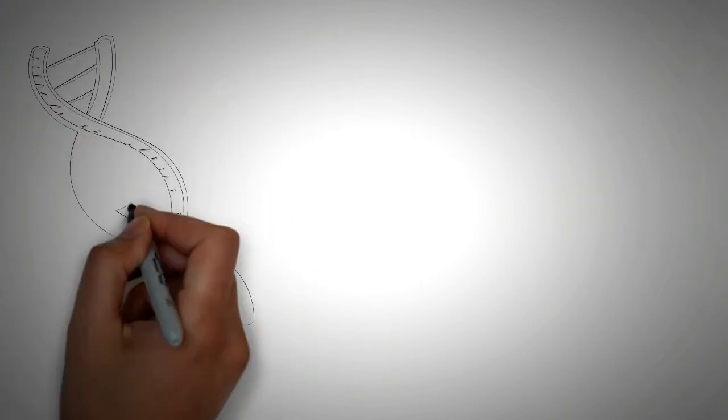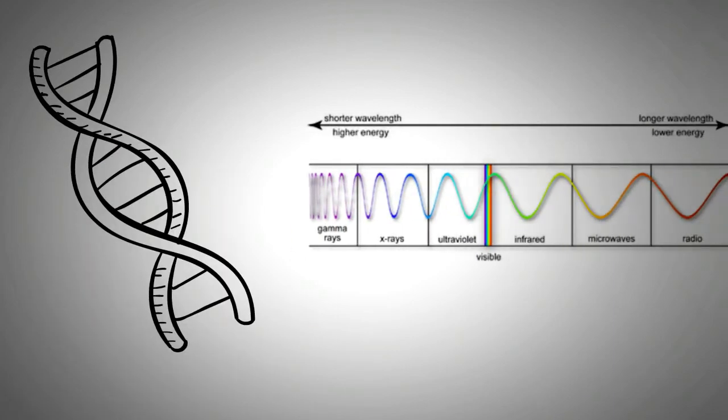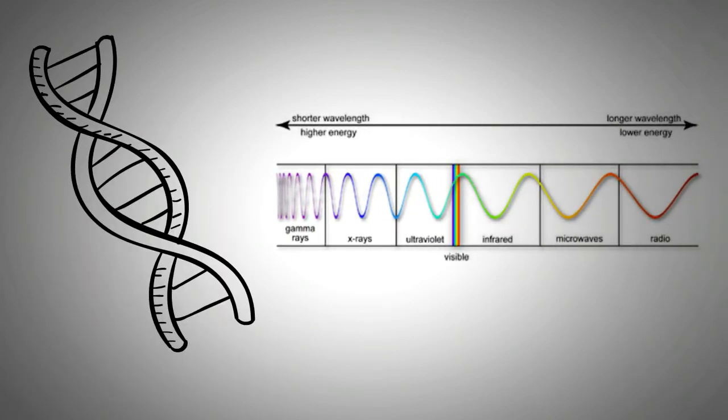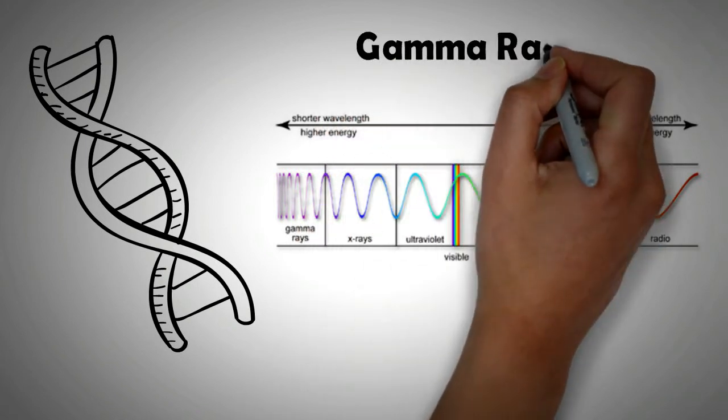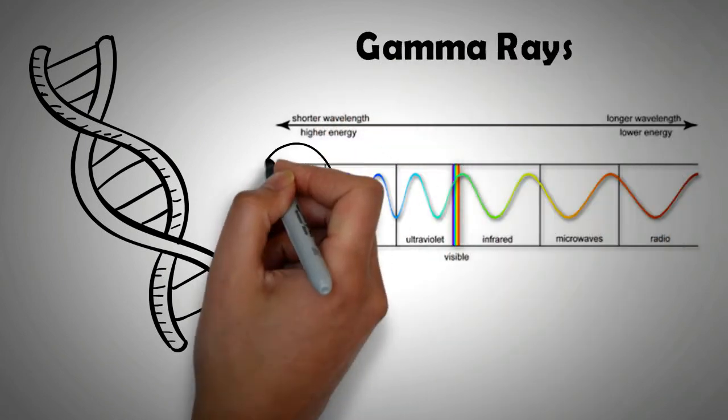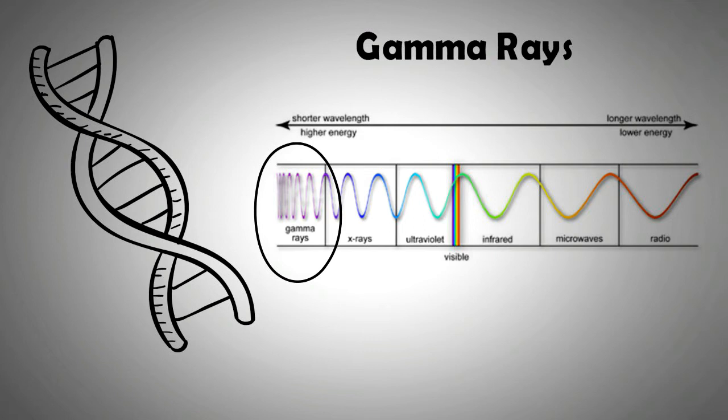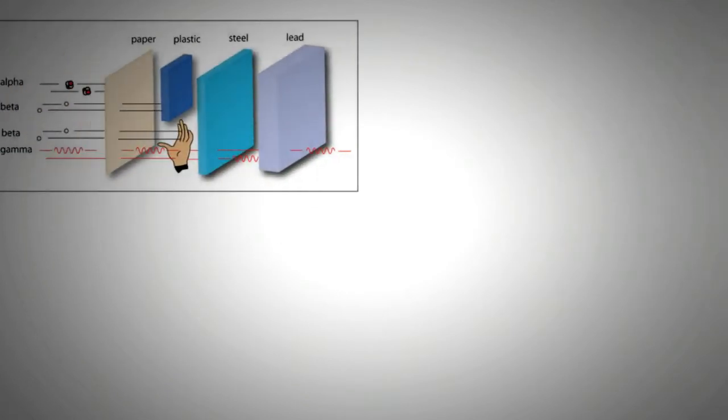Now it is scientifically known that DNA can be altered or even destroyed when exposed to gamma rays. Gamma rays are the most powerful electromagnetic radiation known to man, even more powerful than ultraviolet rays and hundred times stronger than x-rays. They have the ability to penetrate through solid walls.